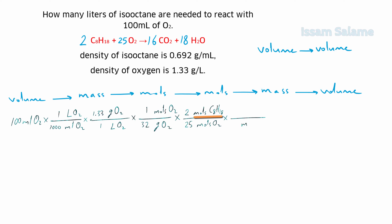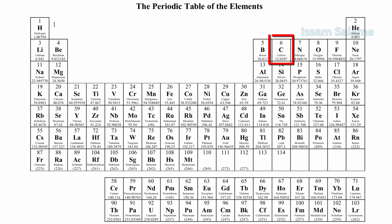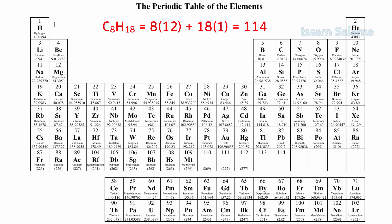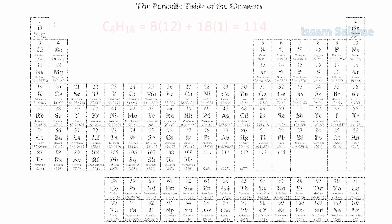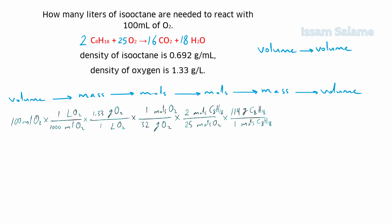Then we multiply by another fraction to convert moles of isooctane to grams: moles of isooctane in the denominator and grams of isooctane in the numerator, with 1 next to moles. The molar mass of isooctane is calculated from the periodic table: carbon is 12 and hydrogen is 1, giving a molar mass of 114 g/mol, which we write next to grams of isooctane.